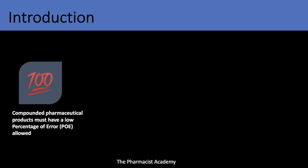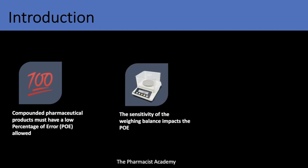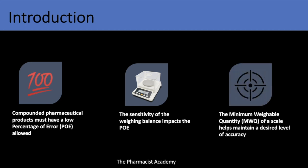Compounded pharmaceutical products must have a low percentage of error. When you're compounding medications you have to weigh things and measure things — you want to make sure there is a low percentage of inaccuracy. There is something known as the sensitivity, which tells you the lowest amount that the balance can weigh. Weighing anything less than that will lead to inaccuracy. There is also something known as the minimum weighable quantity, which is different from the sensitivity because it takes into consideration the percentage of error.